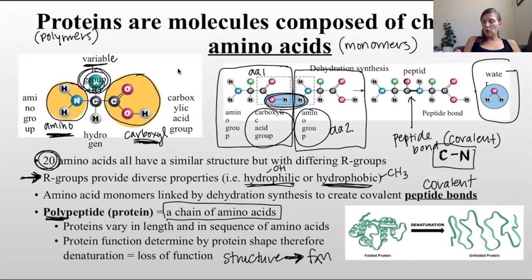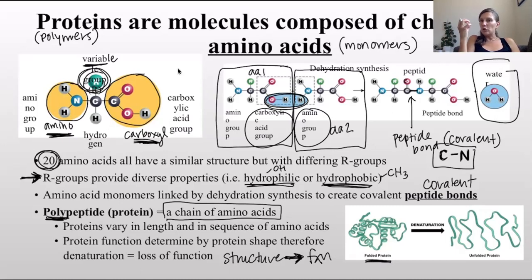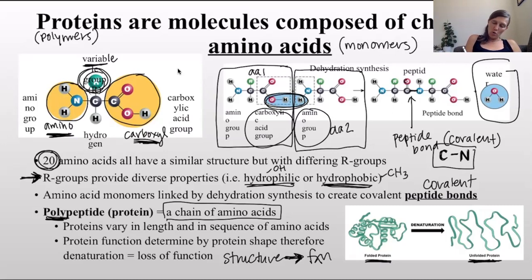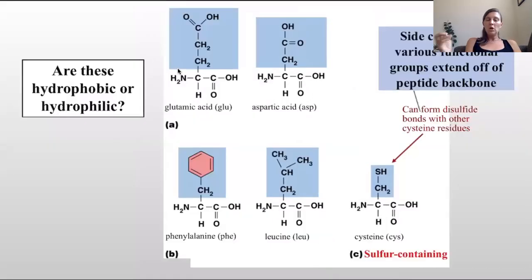If you have proteins that lose their shape for whatever reason, you lose the function - that's called denaturation. Here we have a folded protein: a chain of amino acids brought together through dehydration synthesis and peptide bonds forming a big long chain that folds into interesting shapes. When a protein becomes denatured, it goes back to just the chain of amino acids - an unfolded protein - and that means no function.